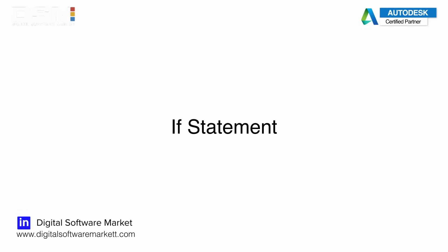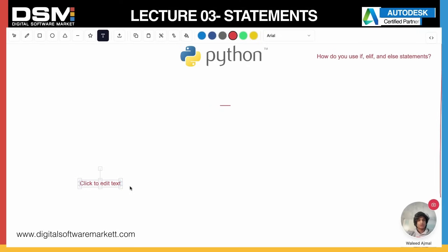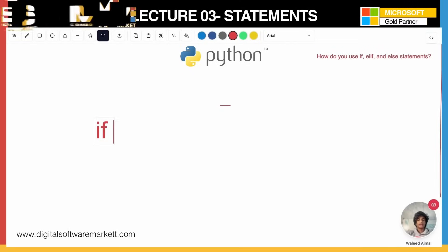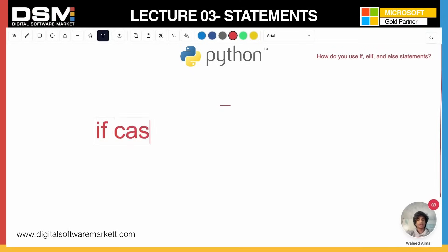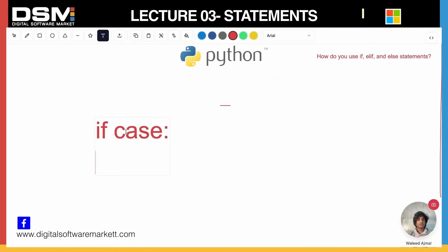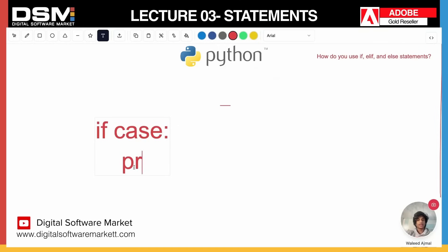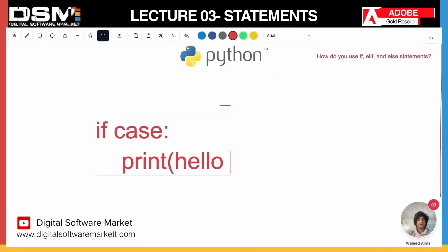Let's review the if statement. As basic as it is, it starts with 'if', then you have your condition here, and then you close the condition. Keeping in mind the syntax, you have to start with the first letter of the case, and then you write your code — for example, print hello.